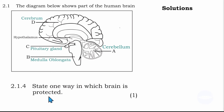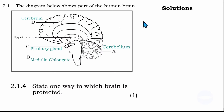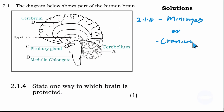Question 2.1.4 says: state one way in which the brain is protected. The brain is protected by the three meninges — so we can say meninges. We can also say cranium. The cranium is the head bone; all the bones that make up the head, including the skull, we call the cranium. So the brain is protected by the meninges or by the cranium.